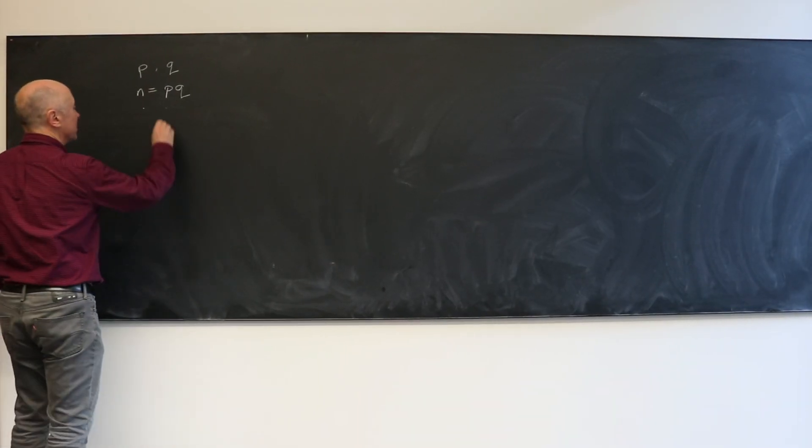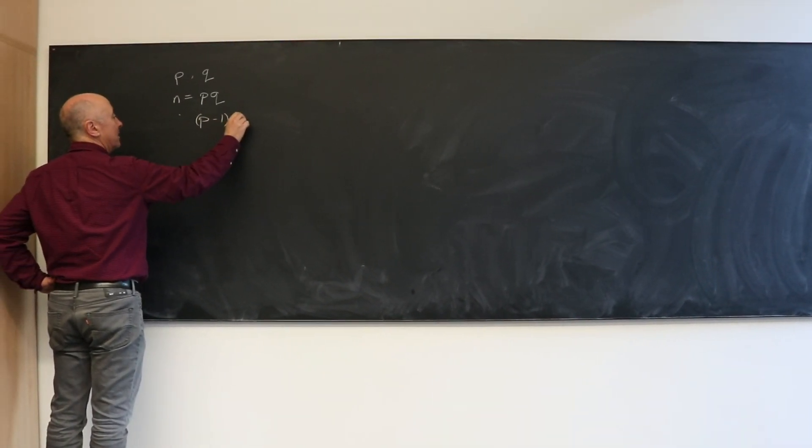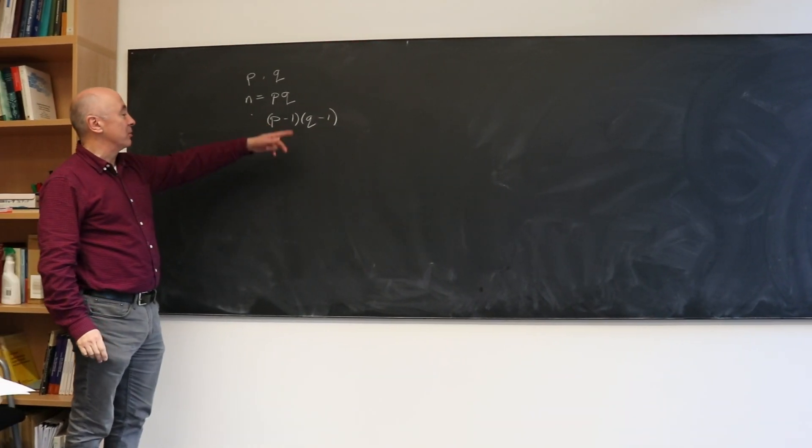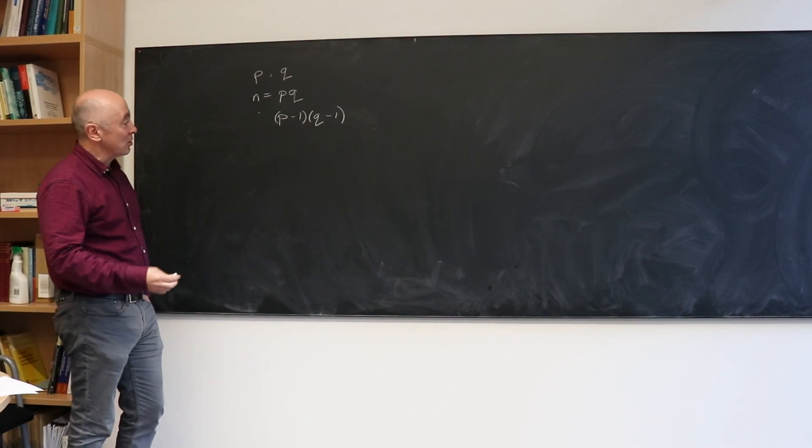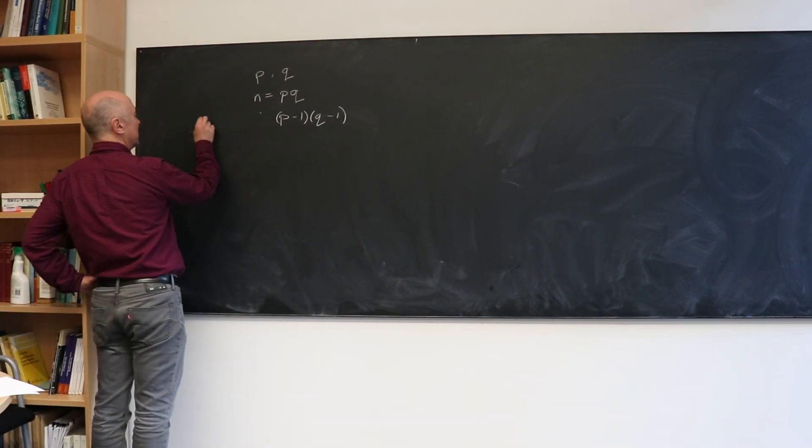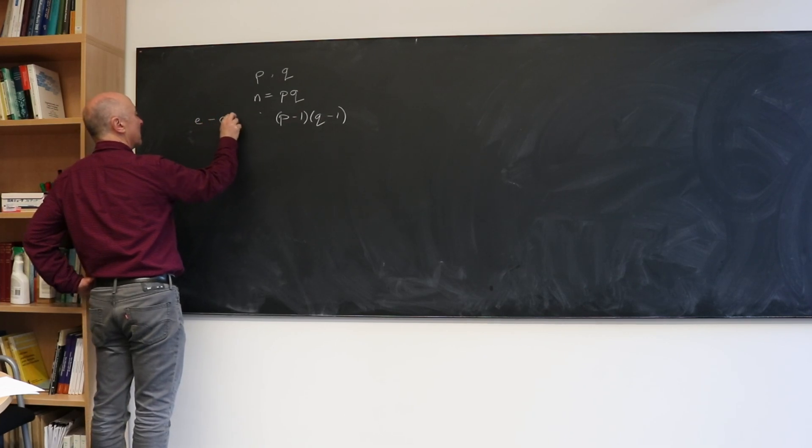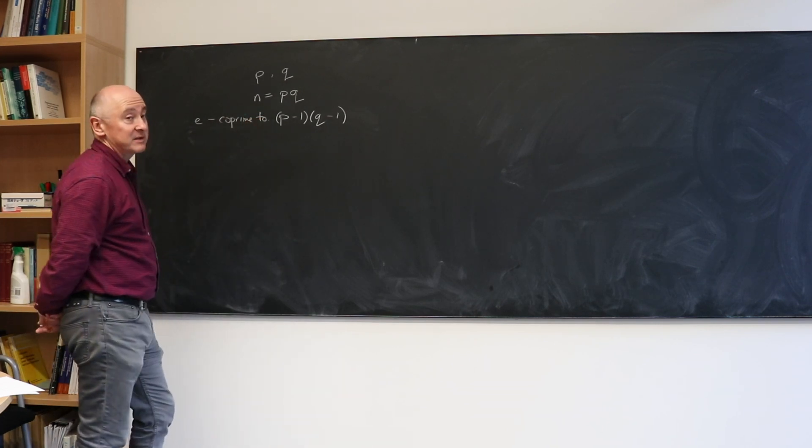We're going to form P minus one and multiply it by Q minus one, and then we want to choose a number that's coprime to this number, that has no factors in common with it. So we'll choose a number E that's coprime to that number. I'll give some examples later.